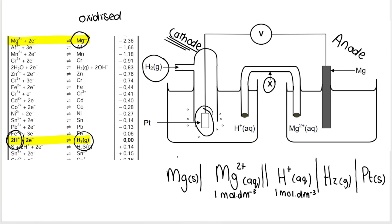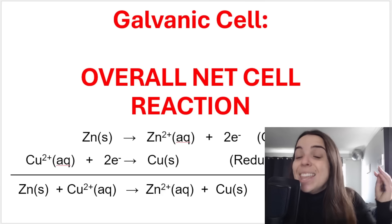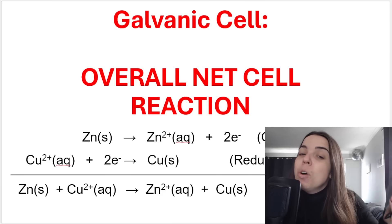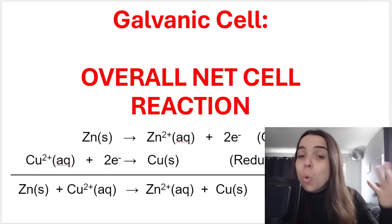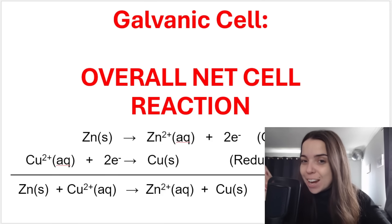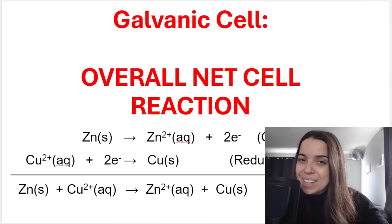In the next lesson, we'll go over how to write the overall or net cell reaction for galvanic cells.